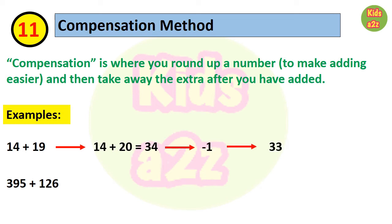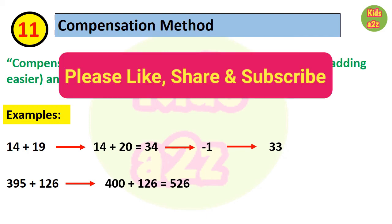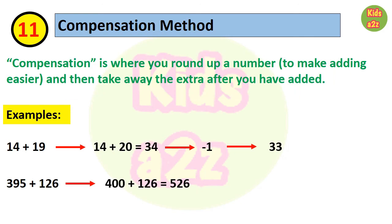Similarly, to add 395 and 126, we will round up the number 395 to 400. Since we added 5 to the equation, we now need to subtract 5 from the answer to compensate for the adjustment. Here I would like to mention one thing: the best way to get better at mental math is to practice daily. So that's all for now. Thanks for watching Kids A to Z.